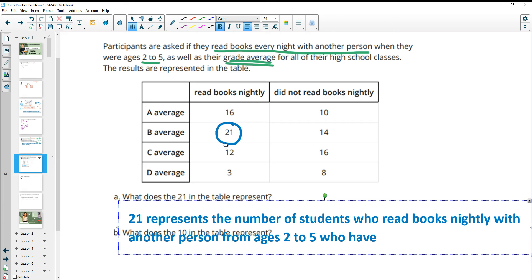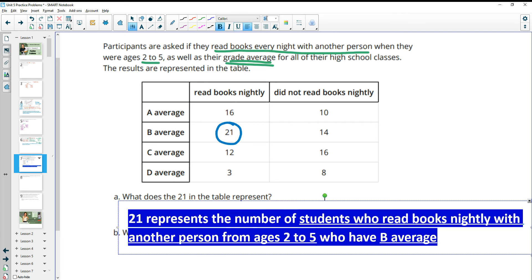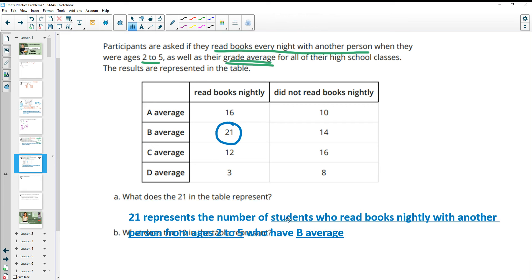So we have the number of students who have a B average, and they are the ones who read. So those are the two spots that they're in in the table, the B average and the read nightly.